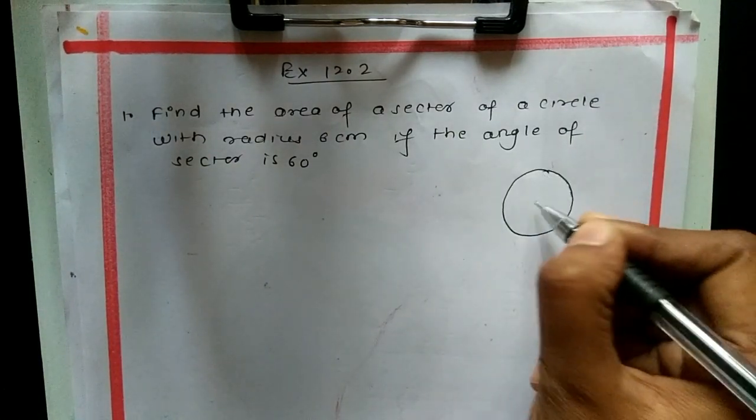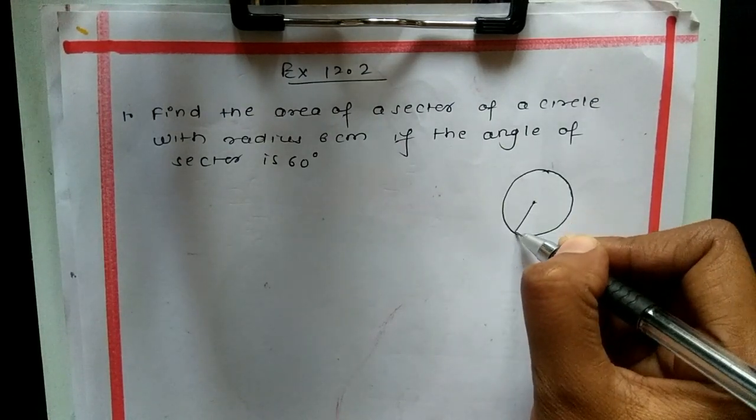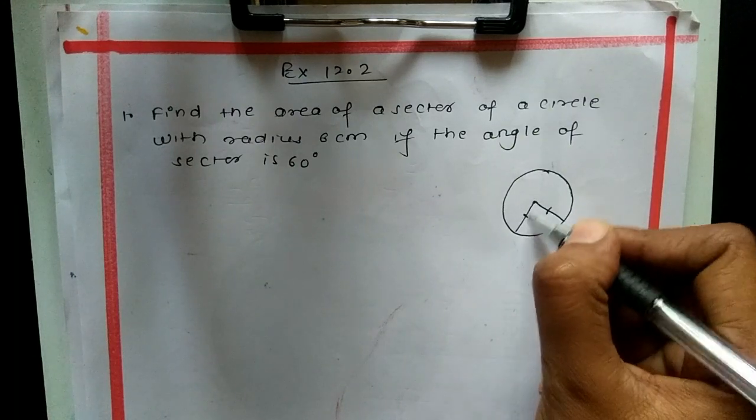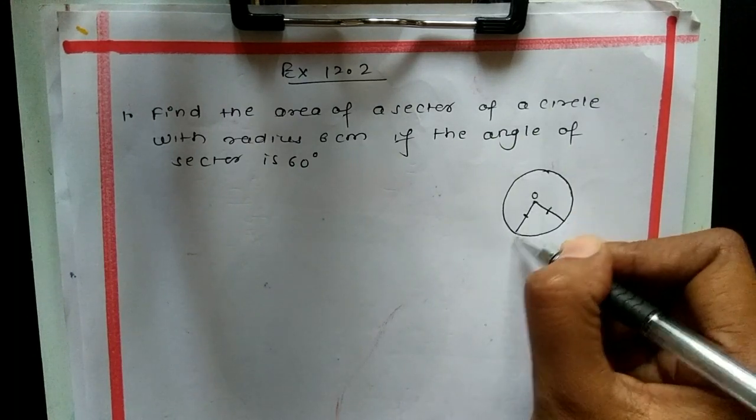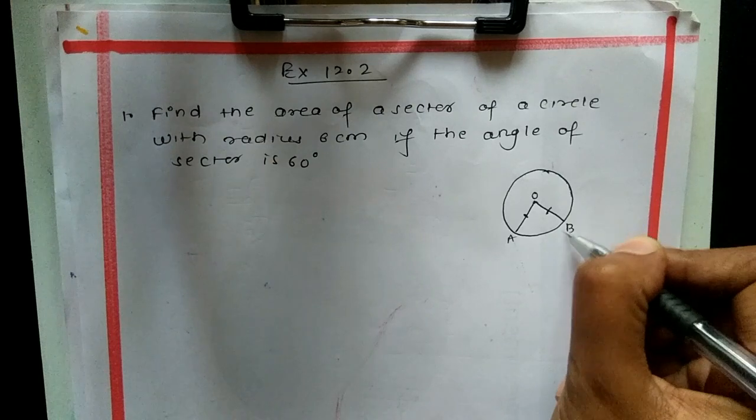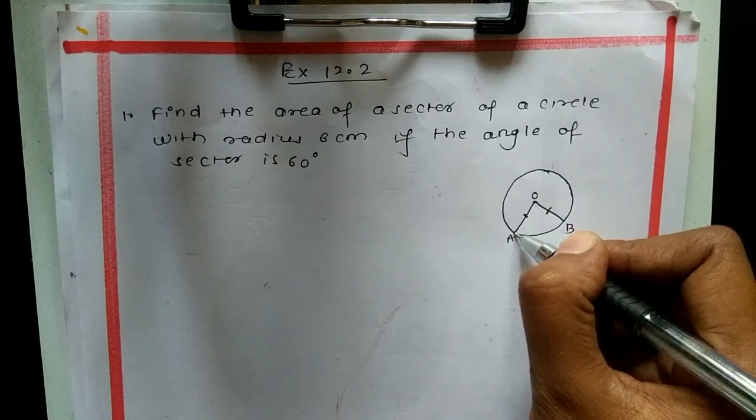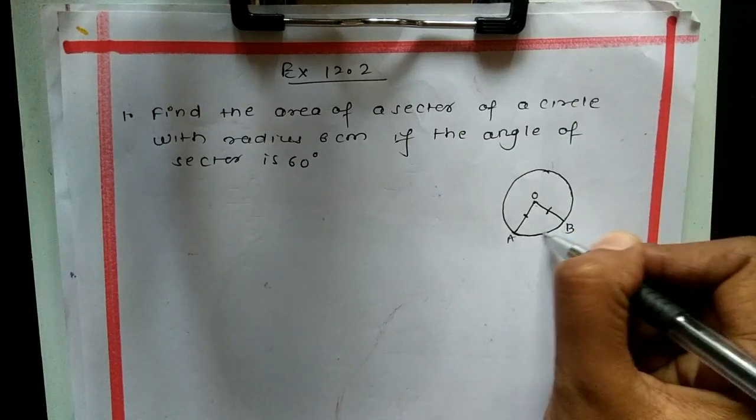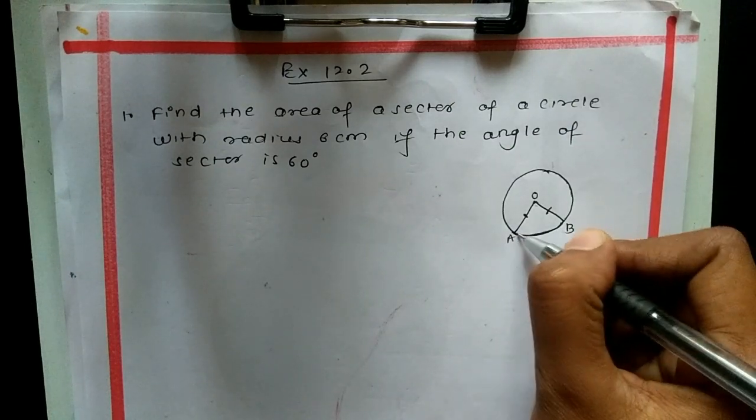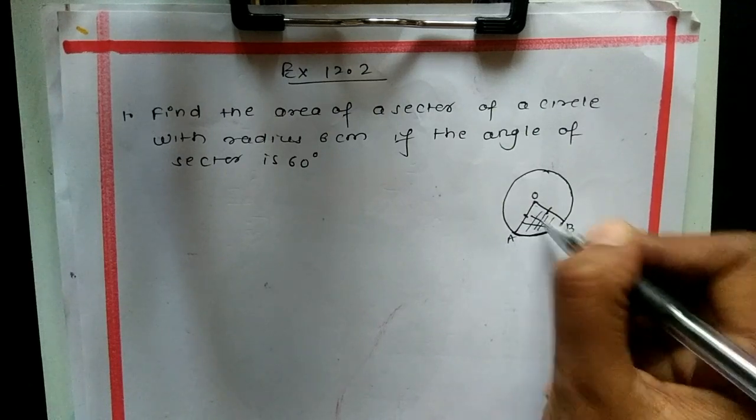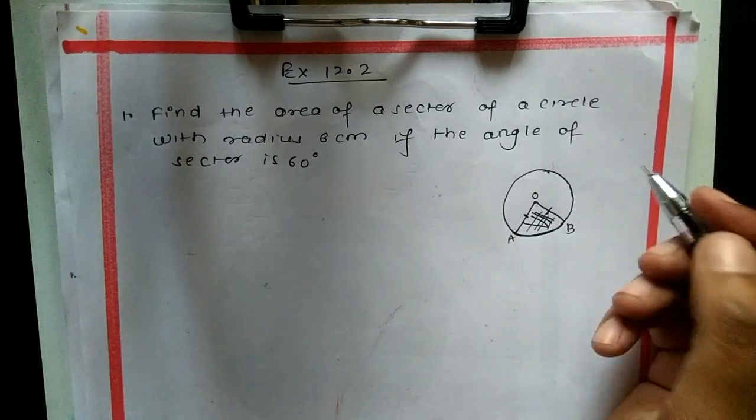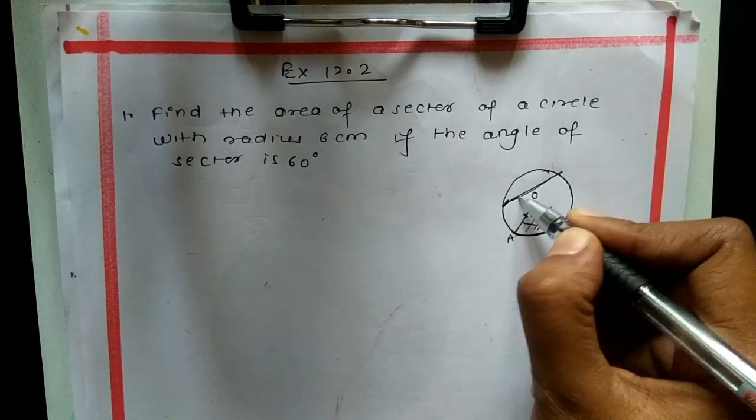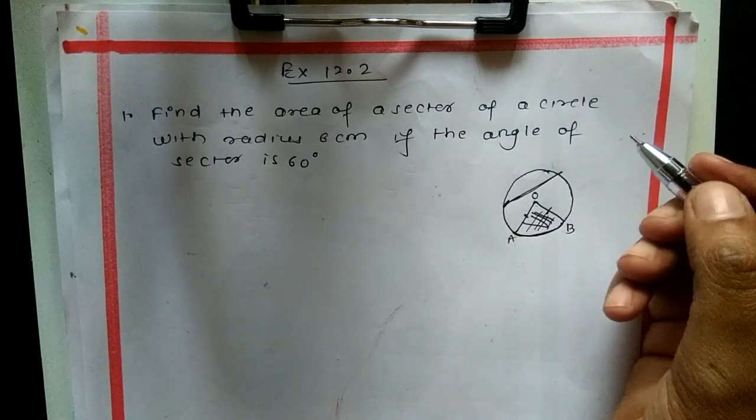What is a sector? This is the center. A sector is the area bounded by two radii - let's take OA and OP - and the corresponding arc which joins these radii. This area is called a sector.